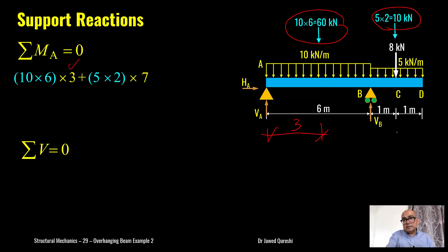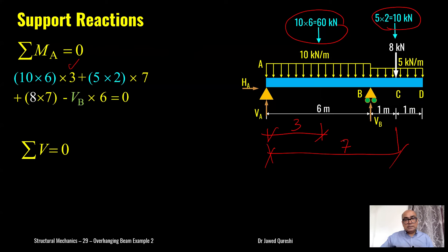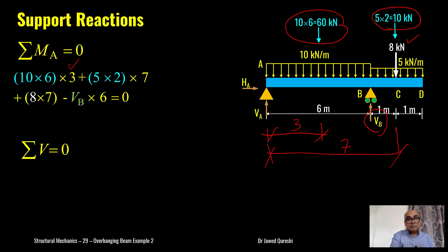The second load is 5 × 2 UDL at a distance of 7 meters from point A, again creating a clockwise moment. Then the point load of 8 kilonewtons is also 7 meters away from point A. VB, which is the reaction, creates an anti-clockwise moment with respect to A, with a distance of 6 meters from B to A — that's the reason I have a negative sign here.